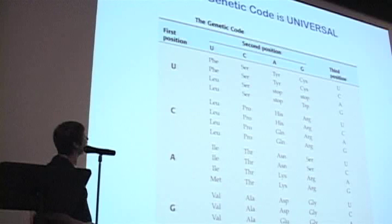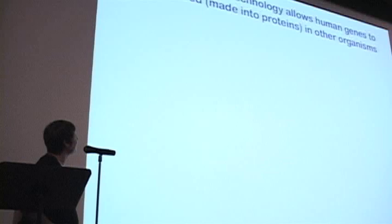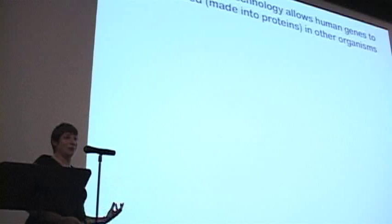And what this allows is for us to manipulate things to help treat human disease, for one thing, and also to learn lots of cool things about science. So recombinant DNA technology, for example, which came around in the mid-1970s, allowed us to take genes from humans and make proteins that sick people need in other organisms, such as bacteria.